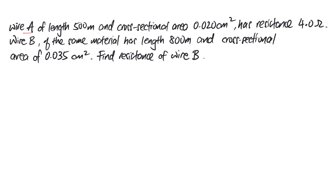In this second example, you are given wire A of length 500 meters, cross-sectional area of 0.020 cm², and a resistance of 4 ohms. There's another wire B of the same material — therefore same resistivity — of length 800 meters and cross-sectional area of 0.035 cm², and you are required to find the resistance of wire B. This is similar to previous questions, but it's a bit special because the length changes by a factor that isn't very nice, so we will stick to the formula.